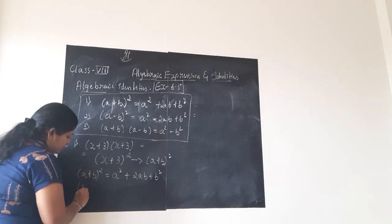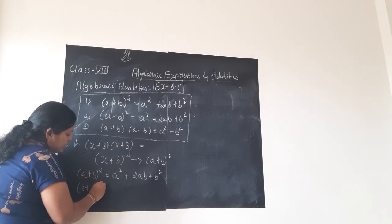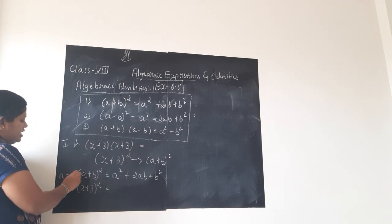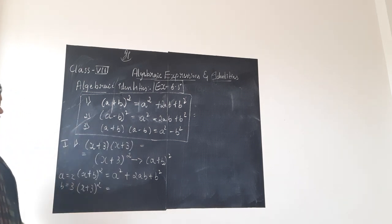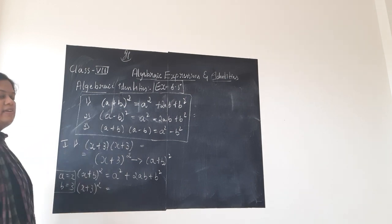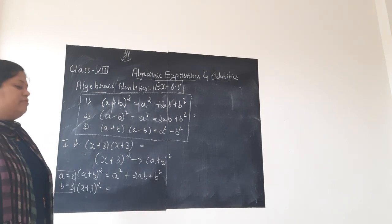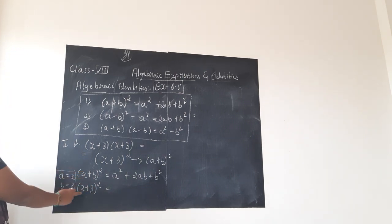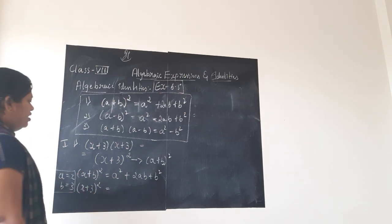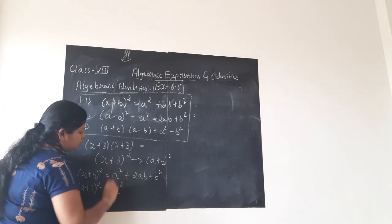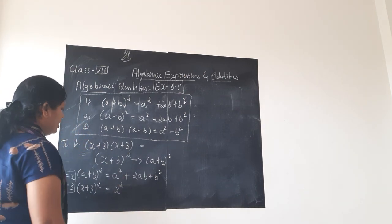In place of a plus b, I have x plus 3 whole square. Here, a is x and b is 3. Make a habit of writing what the values of a and b are. If there is a minus sign, you won't go wrong with substituting. So a is x and b is 3. In place of a squared, I will write x squared.